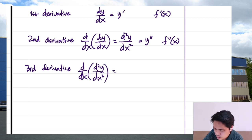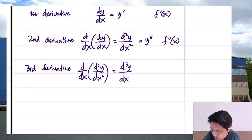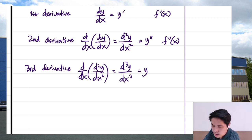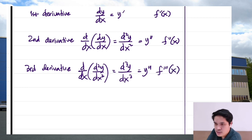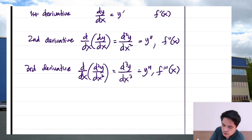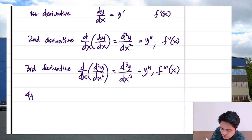The third derivative is the derivative of the second derivative, written as d³y/dx³, or y triple prime, or f triple prime of x.